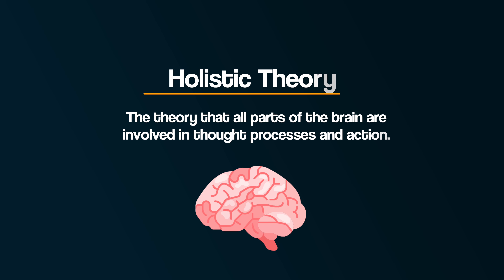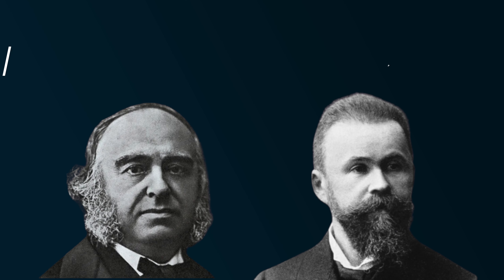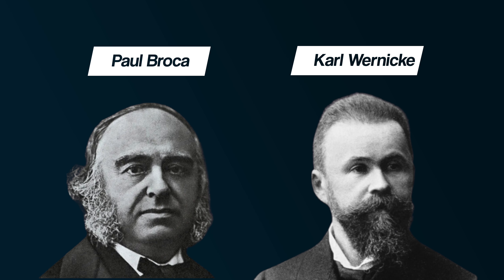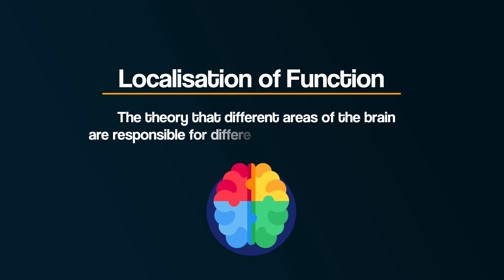In the 19th century, holistic theory was the dominant view of the brain at the time. This is the idea that all parts of the brain are involved in thought processes and action. However, the research of Paul Broca and Carl Wernicke led to a different theory: localisation of function. This is the theory that different areas of the brain are responsible for different functions or behaviours.